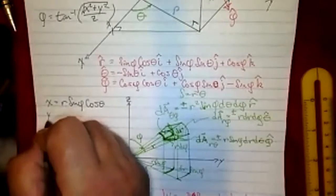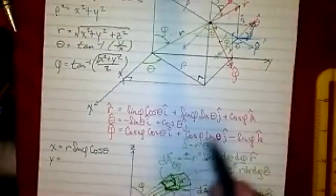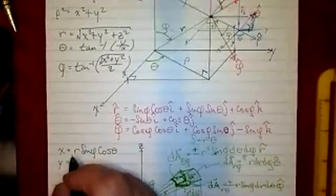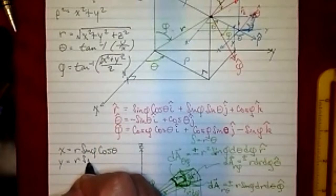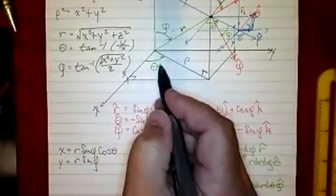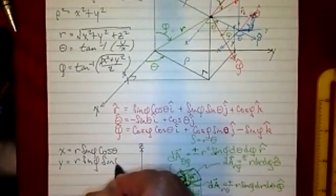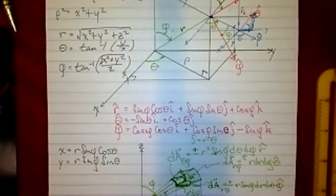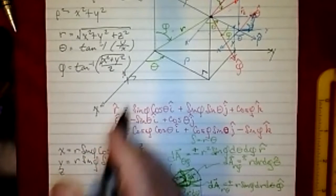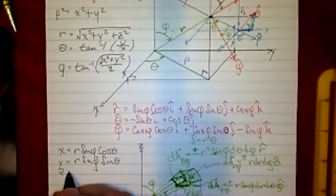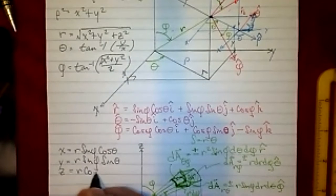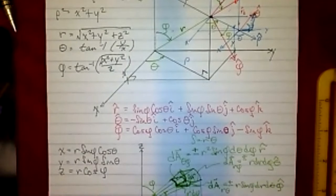The y transformation would again take r and project it down into the xy plane, giving sine phi times r. So y equals r times the sine of phi times the sine of theta. And finally, z is just going to be the cosine of phi times r — so z equals r cosine phi.